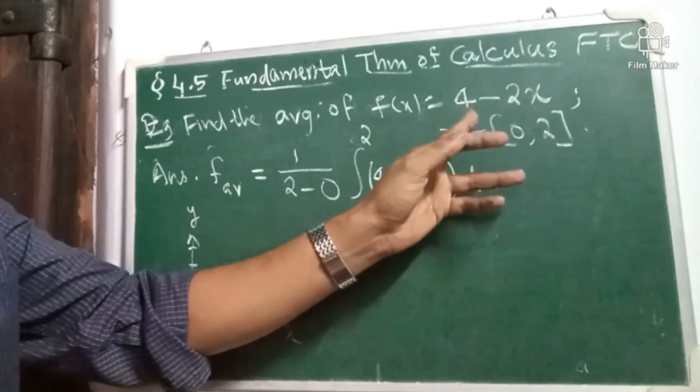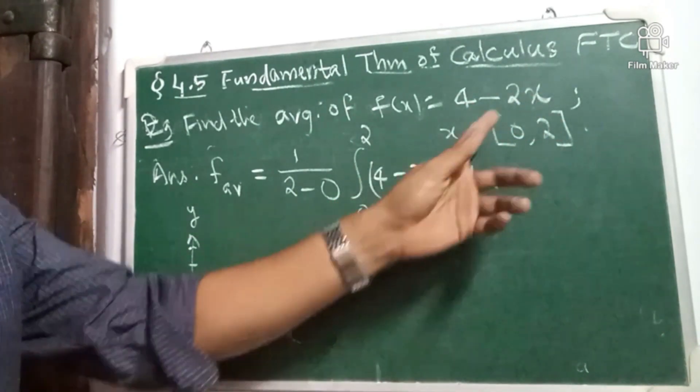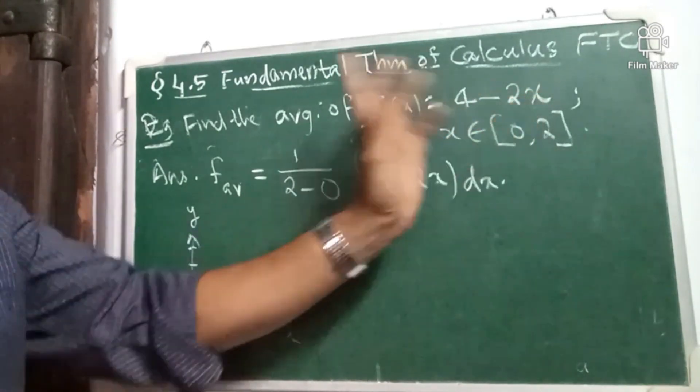When x equal to 0, y is equal to 4. That means the curve passes through the point 0, 4.